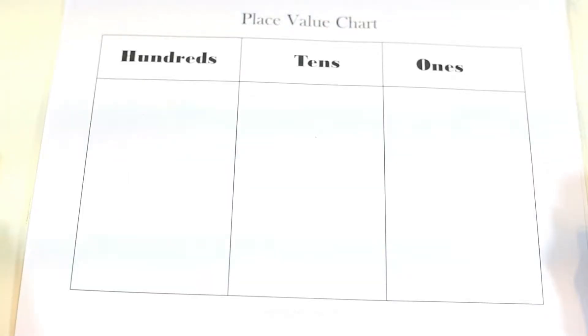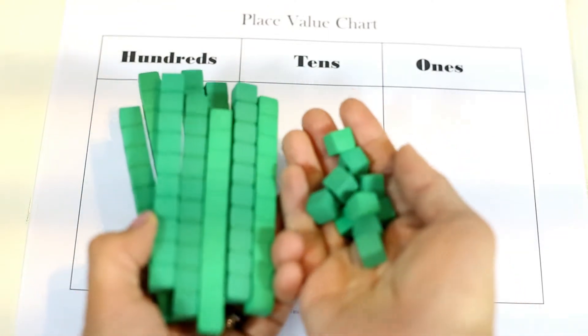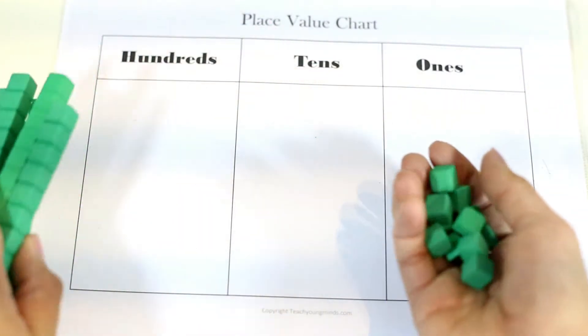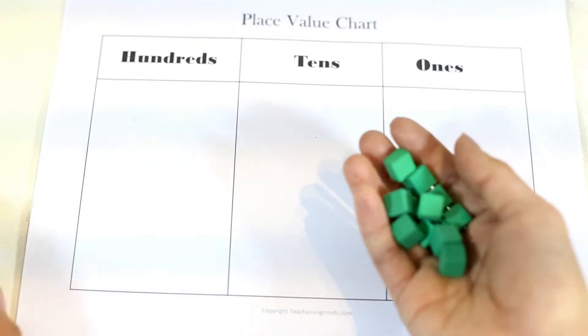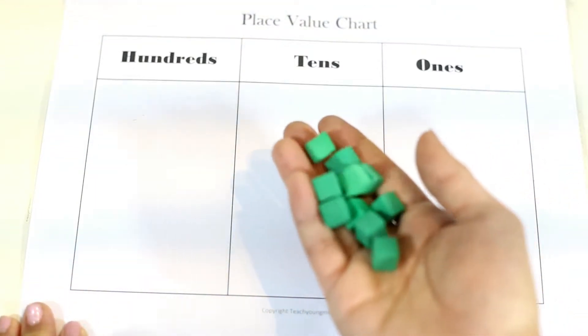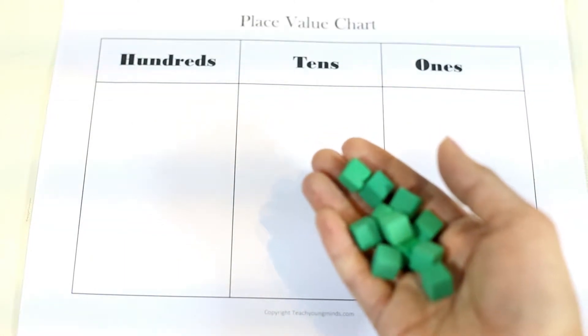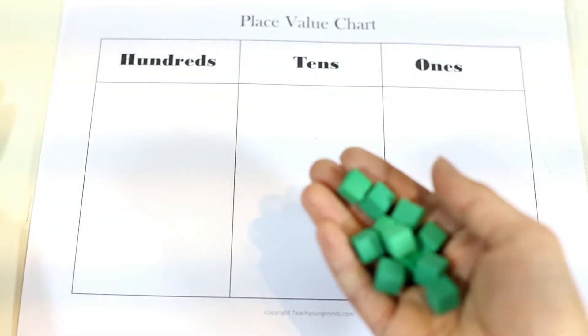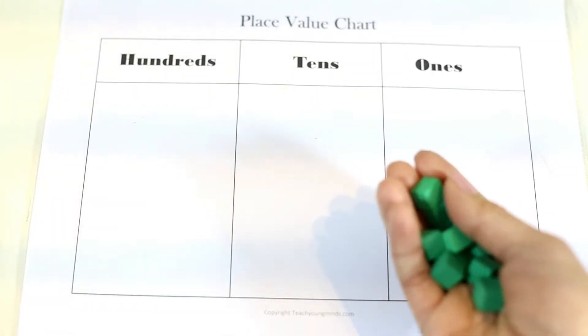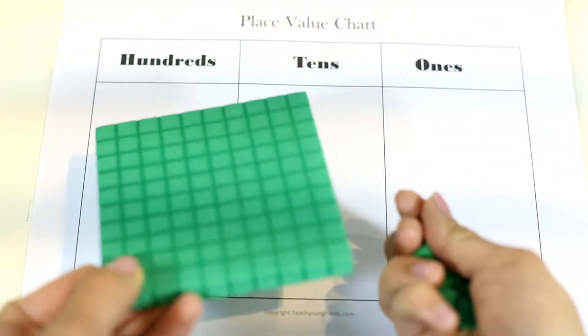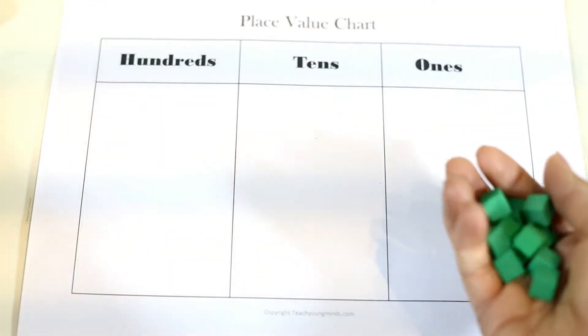In the activity roll to 100, you will need something to represent ones, tens, and hundreds. I am using these place value blocks. I will link these in the description below. But you can use anything around your house. You can use little counters, sticks for the tens, and small blocks to represent the hundreds.